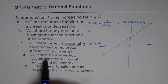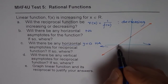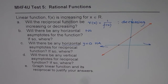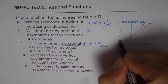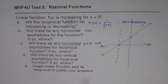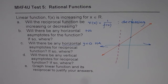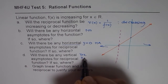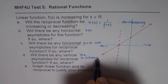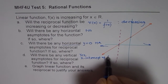Part d: will there be any vertical asymptote for the reciprocal function? The x-intercepts of the original function translate to vertical asymptotes of the reciprocal. So there will be a vertical asymptote at the x-intercept of f(x). Yes, there will be a vertical asymptote, and it will be at the x-intercept of the function f(x).